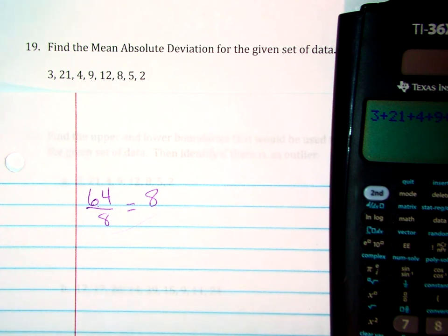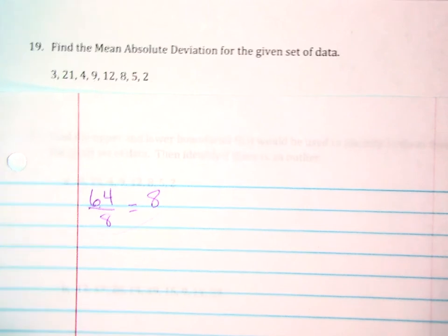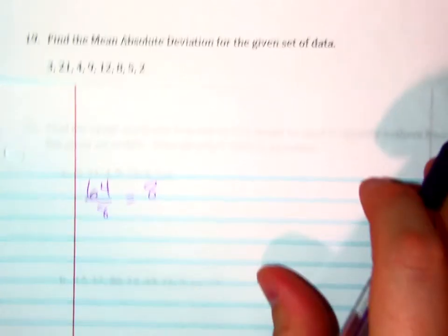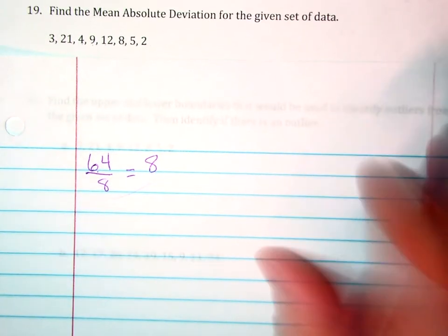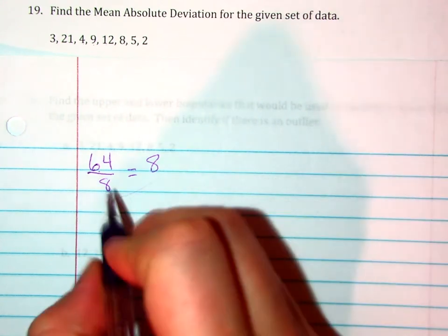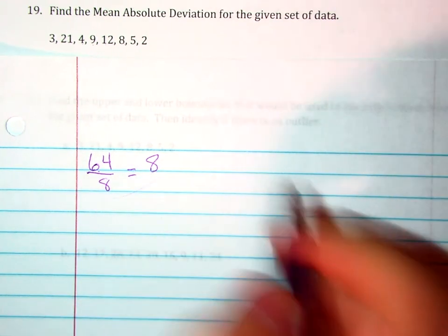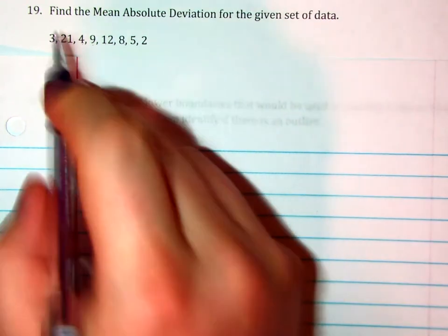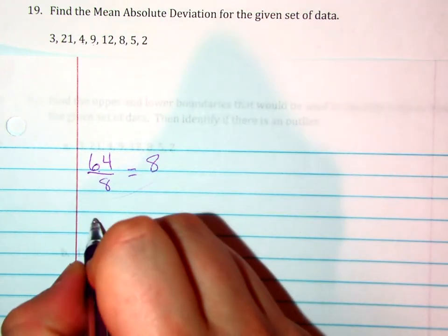If I can't see any work, then the answer is just wrong. So now what do I do with this data? Well, I'm going to take my 8, which is my mean, and I'm going to write it down eight times because I have eight different data points.